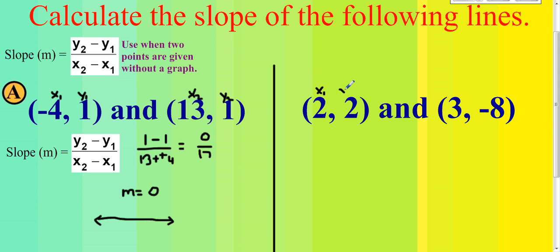Same thing for the second example. We label the coordinates: the first x is x1, the first y is y1, the second x is x2, and the second y is y2.